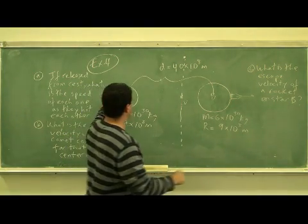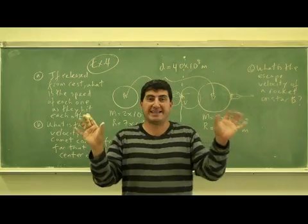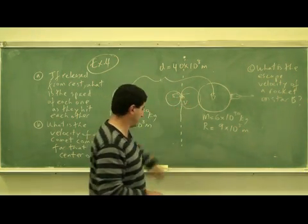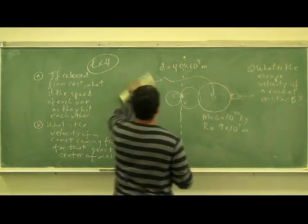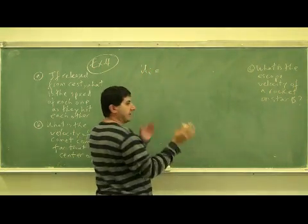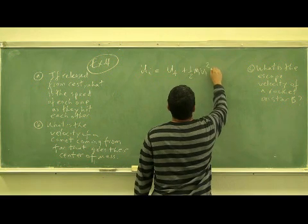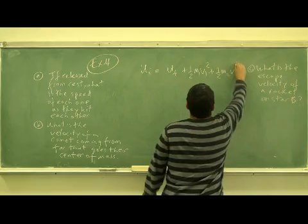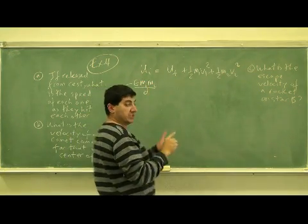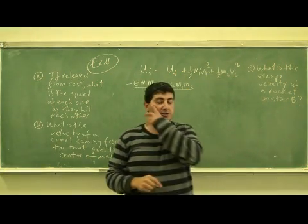So let's do the first one. When released from rest, they are going to come and hit each other at wherever their center of mass is. The initial potential energy that they had is going to be converted into the potential energy that they have when they hit each other plus the kinetic energy of each object. The initial potential energy is equal to negative G M1 M2 over the distance D between their centers. And then the final potential energy is negative G M1 M2 over when they hit each other.